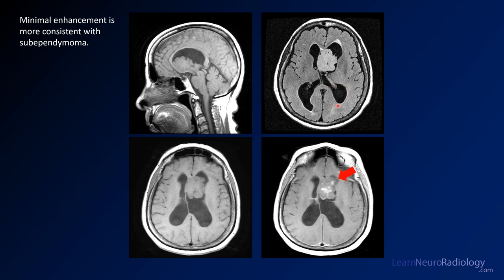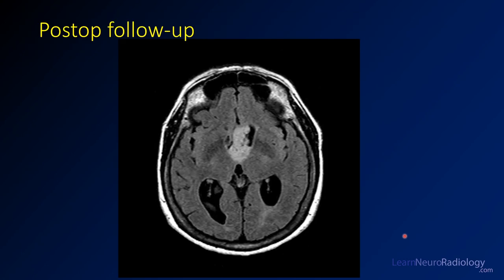You can see the ventricles are far too big even for someone in their 60s, so this person has hydrocephalus, which is probably causing the symptoms. This is a post-op follow-up — they went in through a ventriculostomy, took a small piece to make a diagnosis, and will probably just shunt the hydrocephalus for now. It's a relatively indolent lesion that doesn't have to be completely resected.